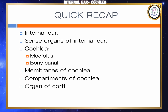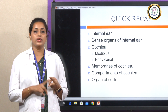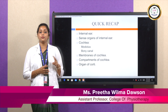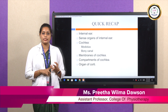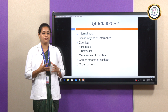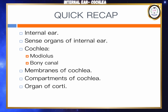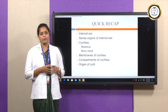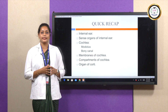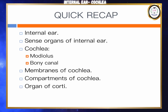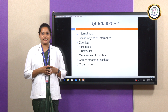In today's session, we learned about the internal ear, also known as the labyrinth, which is composed of the cochlea and the vestibular apparatus. The cochlea consists of the modiolus and the bony canal, which winds around the modiolus for two and a half turns. Two membranes — the vestibular membrane and the basilar membrane — divide the cochlea into three compartments: the scala vestibuli, scala media, and scala tympani. We also had an overview of the organ of Corti. Thank you.